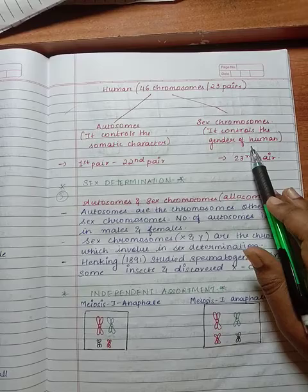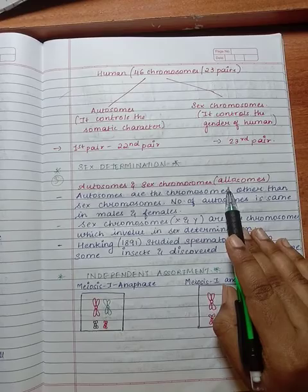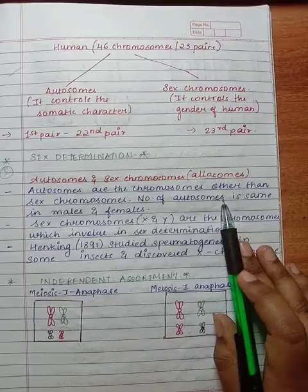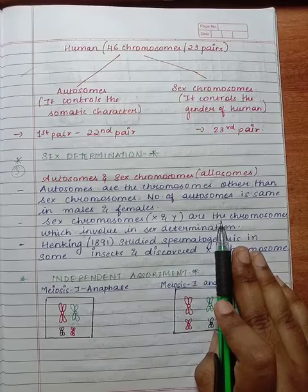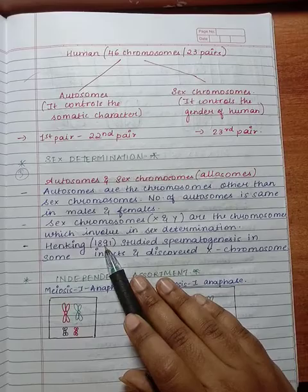Sex determination involves autosomes and sex chromosomes, also called allosomes. Autosomes are the chromosomes other than the sex chromosomes. Number of autosomes is the same in males and females. Sex chromosomes X and Y are the chromosomes which involve in sex determination. Henking in 1891 studied spermatogenesis in some insects and discovered the X chromosome.